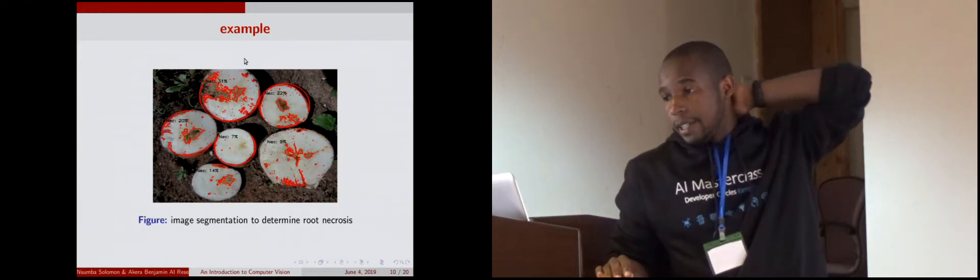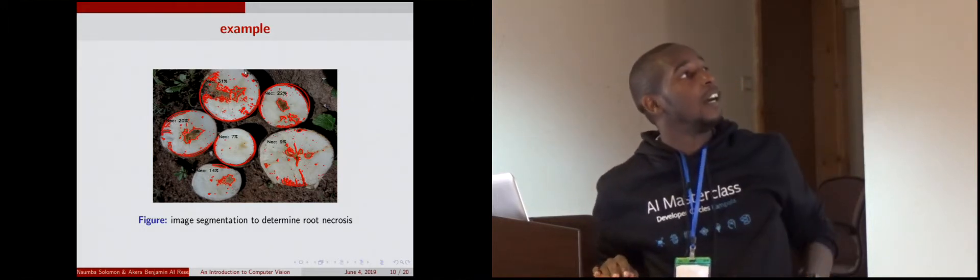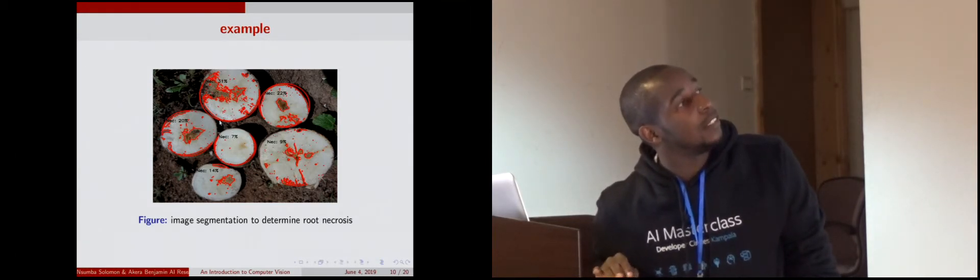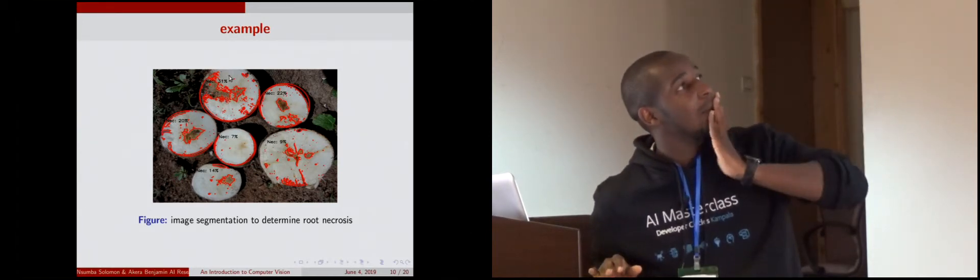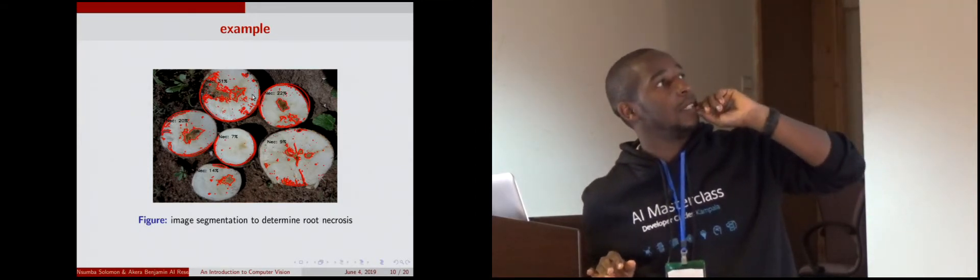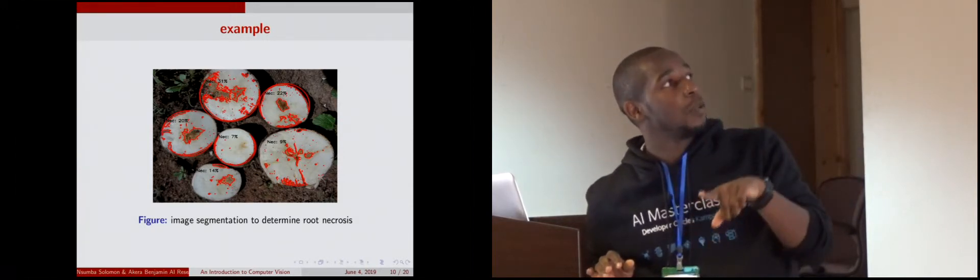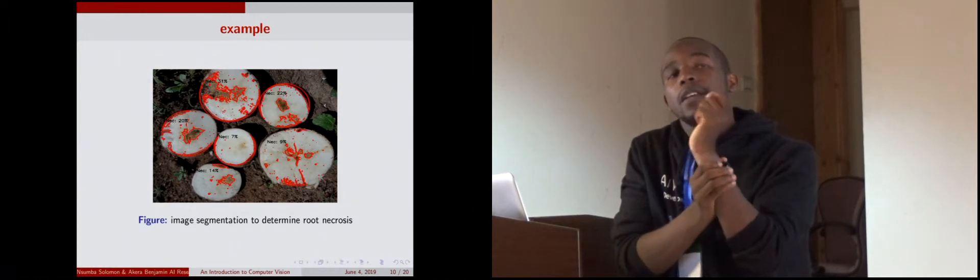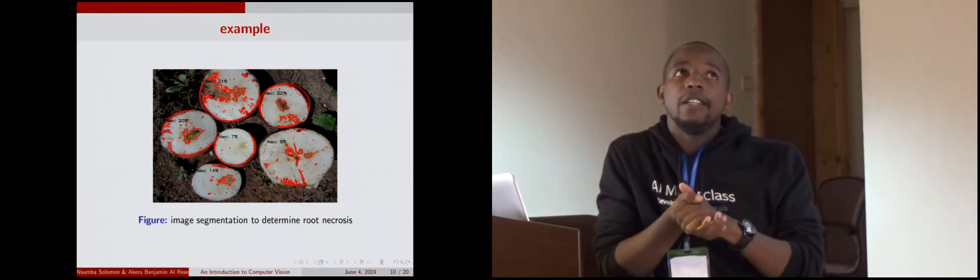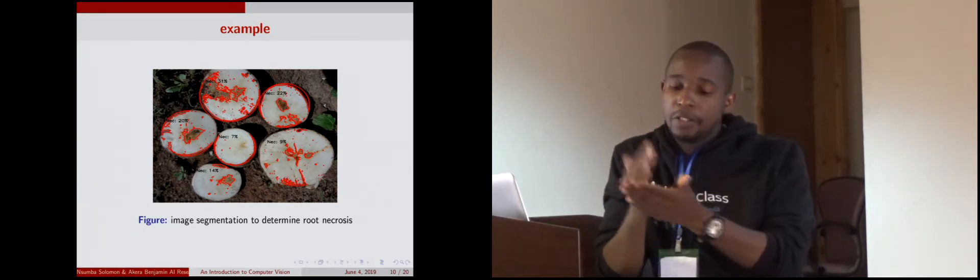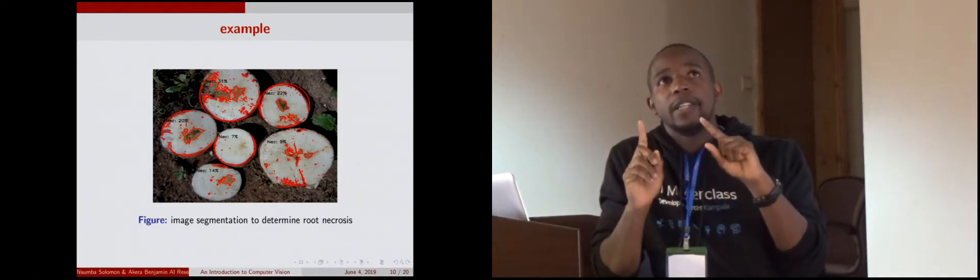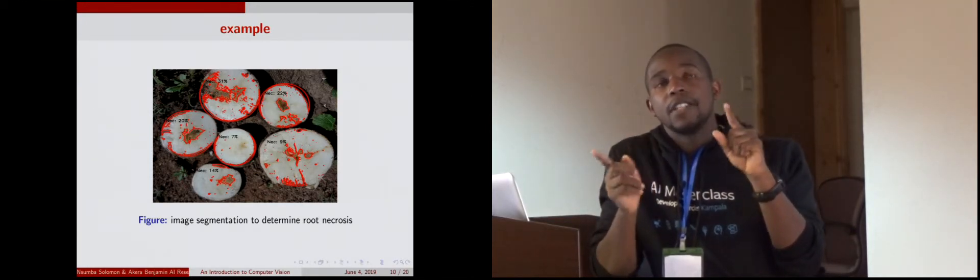So the question is, for the segmentation that you do with cassava, how would we do that annotation? Yes, so we get clean images. By clean I mean these red dots wouldn't be there for the images that you collect in the field. Maybe I'll give a little background. We go with the breeders to the field and they harvest the cassava. Then they start uprooting, cutting the tubers and then scoring. When they're doing that, we're taking the pictures of where they have scored and we get their score.